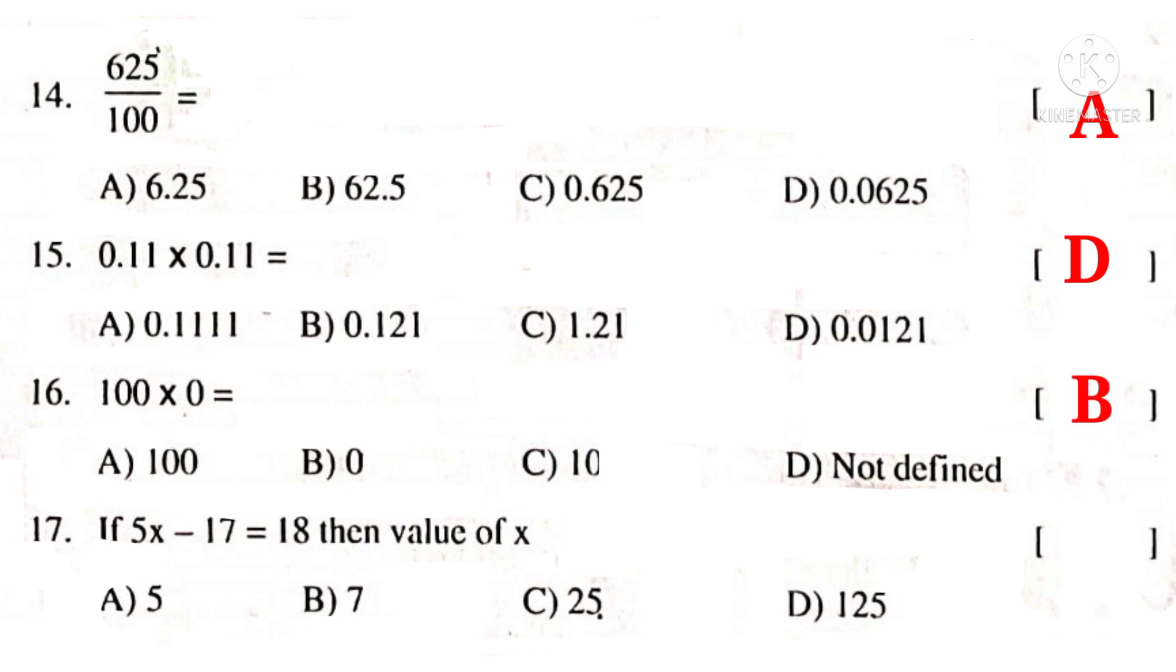If 5x minus 17 is equal to 18, then value of x. 5x is equal to 18 plus 17 because minus 17 when transposed to right hand side it becomes plus 17. 5x is equal to 35 because 18 plus 17 gives 35. So, the correct choice is B.